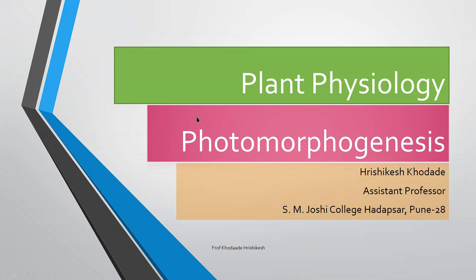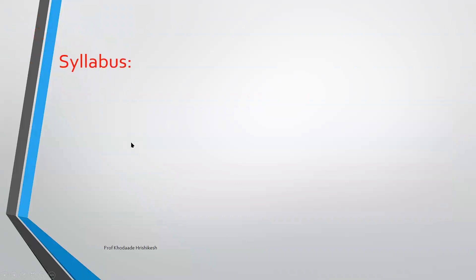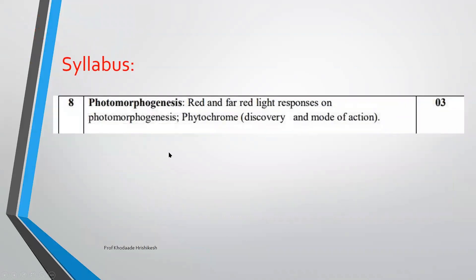Here I am going to present the PowerPoint presentation of the next chapter in plant physiology: photomorphogenesis. This chapter is very important for understanding the response of plants towards light. As per the prescribed syllabus, we have photomorphogenesis, red and far red light response on photomorphogenesis, and phytochrome discovery and mode of action of phytochrome. Three lectures are allocated for this topic.